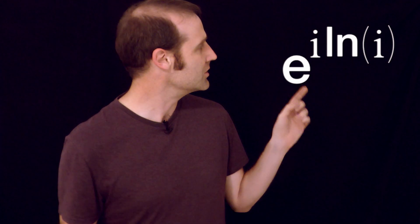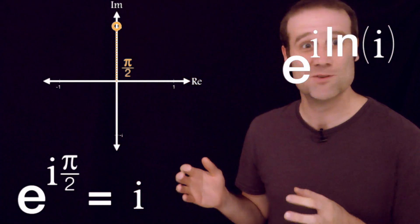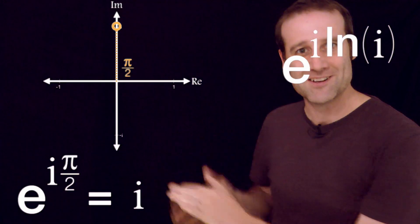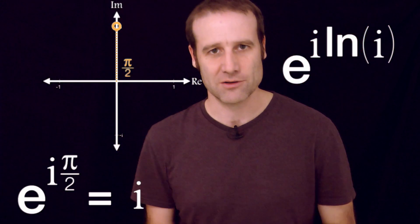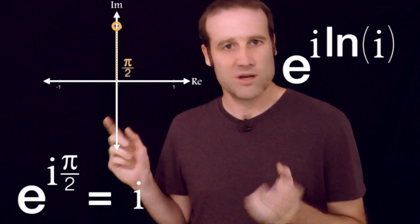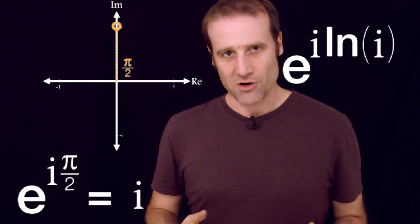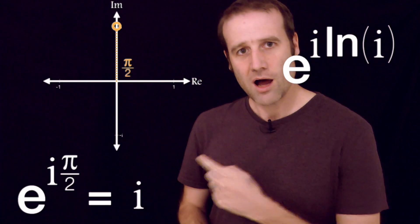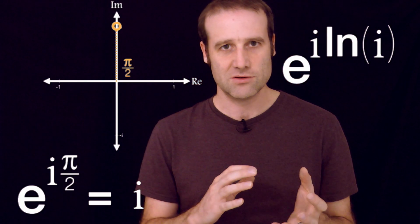We now just have to work out what is the natural log of i. Well, we saw that a moment ago when we were doing our ridiculous things on the complex plane. The screen's getting a little crowded here. We can just read off from before that e to the i pi on 2 equals i. And the natural logarithm is just whatever you have to raise e to to get the value. So to get i, e is to the power of i pi on 2.